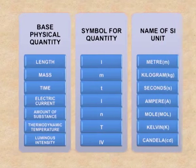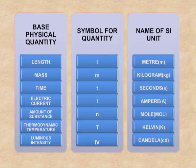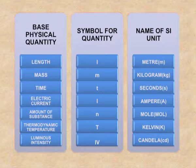The units: the unit of length is metre; for mass, it is kilogram; time, it is seconds; for electric current, the unit is ampere; for amount of substance, the unit is mole; for temperature, it is measured in kelvin; and for luminous intensity, it is candela.